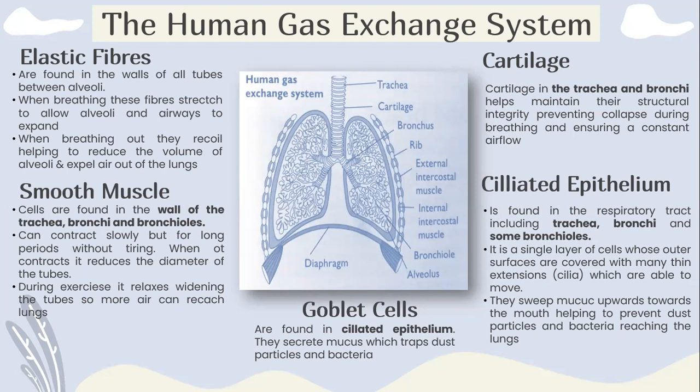Ciliated epithelium is found in the respiratory tract, including the trachea, bronchi, and some bronchioles. It is a single layer of cells whose outer surfaces are covered with many thin extensions called cilia, which are able to move. The mucus moves upward towards the mouth, helping to prevent particles and bacteria from reaching the lungs.